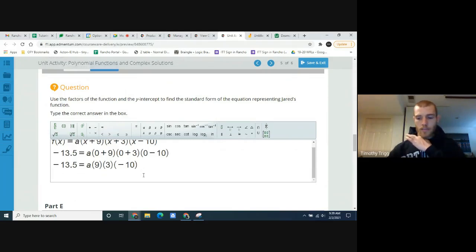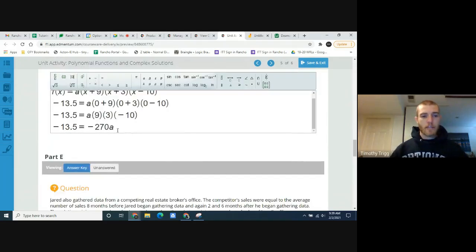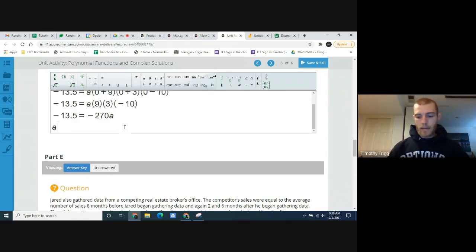So that'll give us negative 13.5 equals, and let's multiply those together, 9 times 3 times negative 10. That's negative 270, a. To get a by itself, you divide both sides by 270. So you'll do negative 13.5 divided by negative 270. 0.05. So then you'll get a is 0.05.